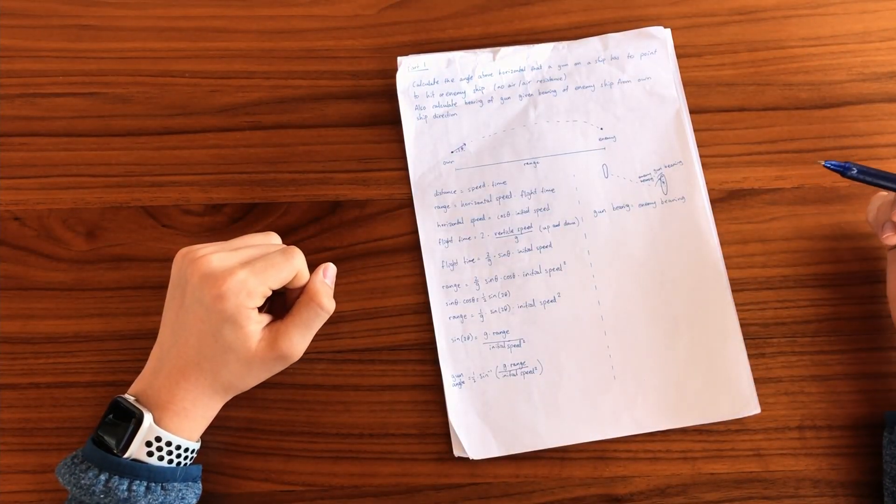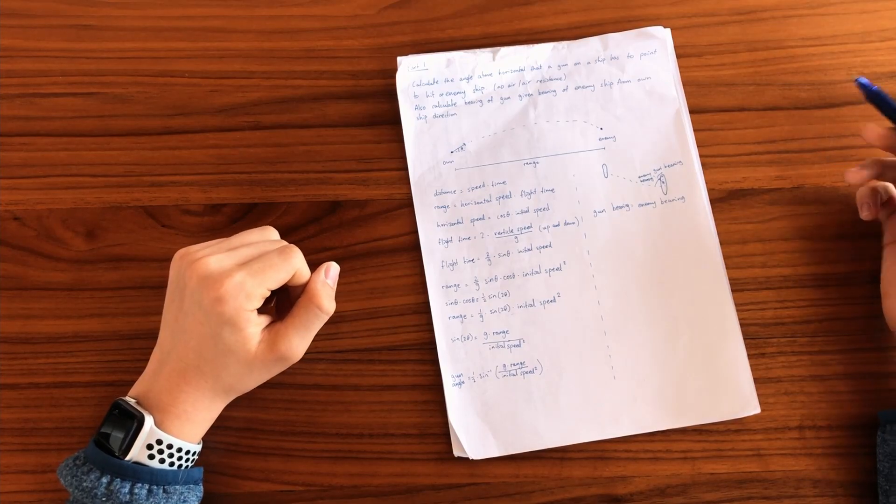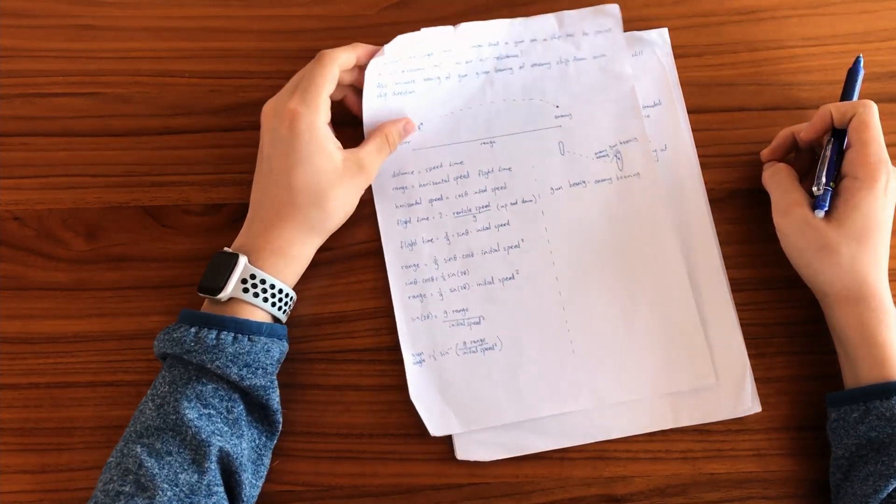In this video, I'm going to explain the maths behind the turret aimer, and I split it into two main parts.